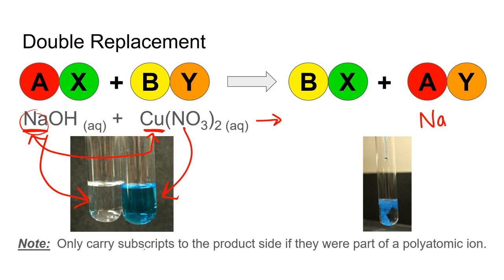We're going to carry over the subscripts to the product side if they were part of a polyatomic ion. For nitrate, we carry over the three of the nitrate ion but not necessarily the two — the two is only present if we need it. We check sodium's charge, which is +1, and nitrate's charge, which is −1. Since those charges are equal, we don't do any drop and cross, so there are no parentheses. We can erase the charges once we have our balanced product.